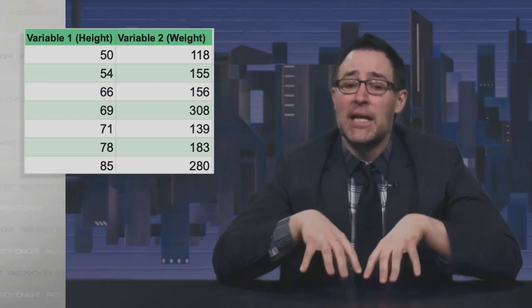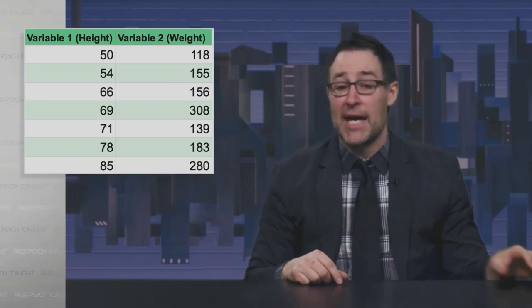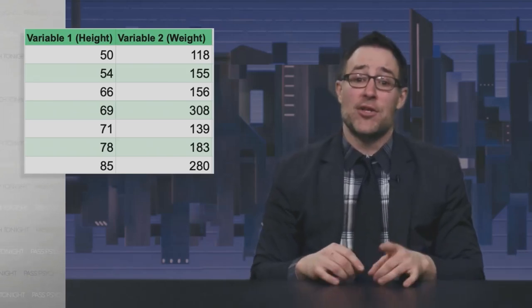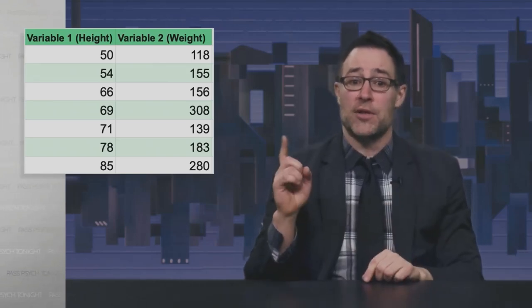Let's say that I ran a correlation with everyone watching. I might ask each of you to give me your height in inches, which would be variable one, and your weight in pounds, which would be variable two. I could do a correlation to see the relationship between these. I would anticipate that as your height increases, so does your weight.